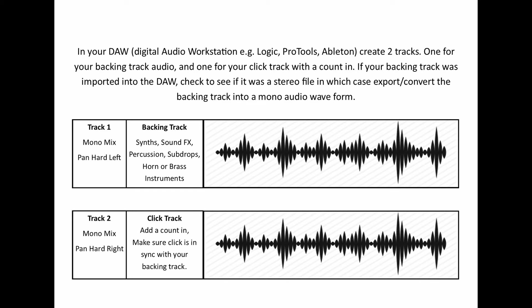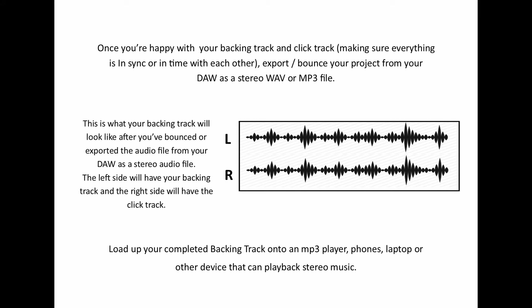If your backing track was downloaded from the internet, check to see if that audio file is stereo - you may need to export or convert it into a mono audio waveform. In the video, track one is a mono mix panned hard left with synths, percussion, sub drop, and horn and brass instrumentation. Track two is also a mono mix panned hard right - that's the click track with a count-in, in sync with the backing track. Once everything lines up, export or bounce that project from your DAW as a stereo WAV or MP3 file, then load it into your playback device.